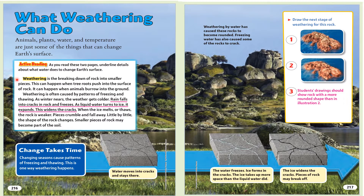Weathering is the breaking down of rock into smaller pieces. This can happen when tree roots push into the surface of rock, or when animals burrow into the ground. Weathering is often caused by patterns of freezing and thawing. As winter nears, the weather gets colder. Rain falls into cracks in rock and freezes. As liquid water turns to ice, it expands, widening the cracks. When the ice melts or thaws, the rock is weaker. Pieces crumble and fall away, and little by little the shape of the rock changes. Smaller pieces of rock may become part of the soil.